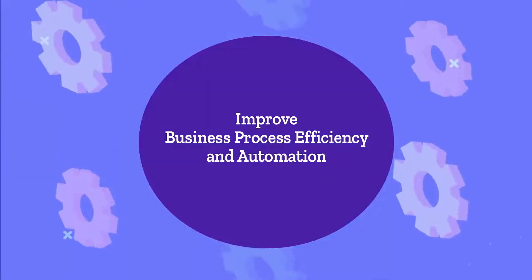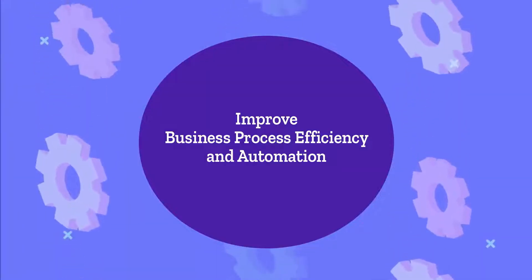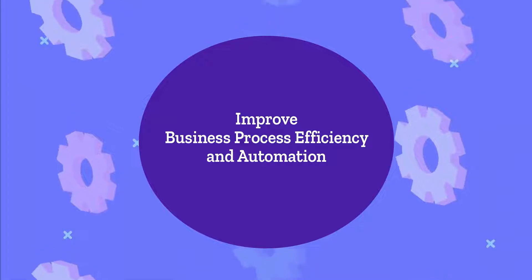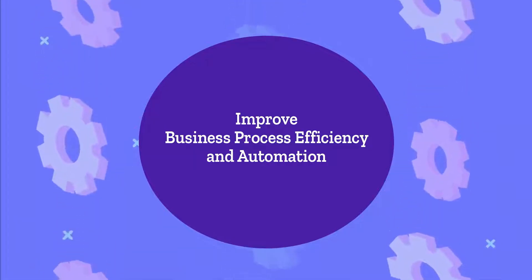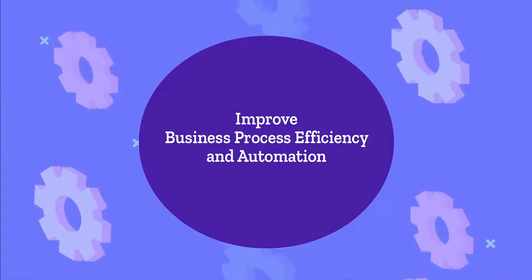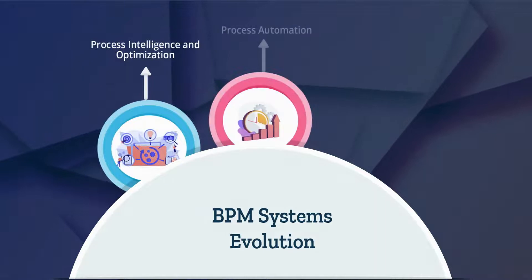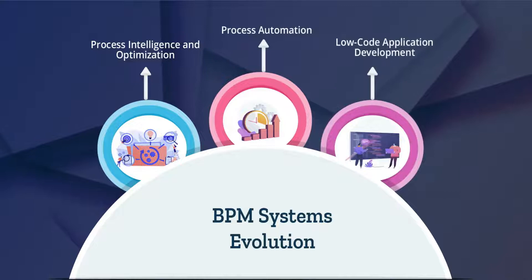With the evolution of BPM systems comes the addition of key features to improve business process efficiency and automation, such as process intelligence and optimization, process automation, and low-code application development.